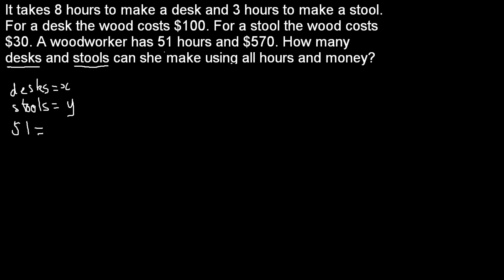How is she going to use up those hours? It takes 8 hours to make a desk, so that'll be 8x, plus 3 hours to make a stool, so that'll be 3y. Our next equation is going to be the dollars: 570 equals 100x for a desk plus 30y for a stool.